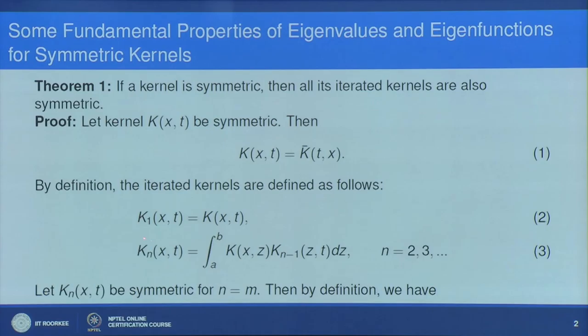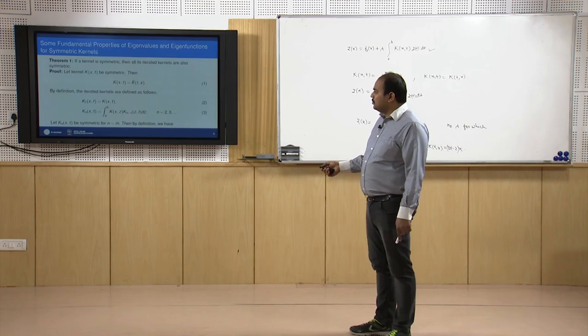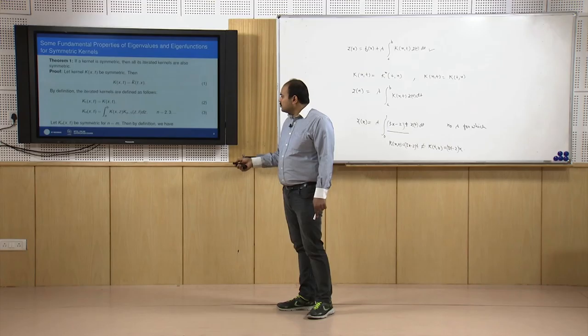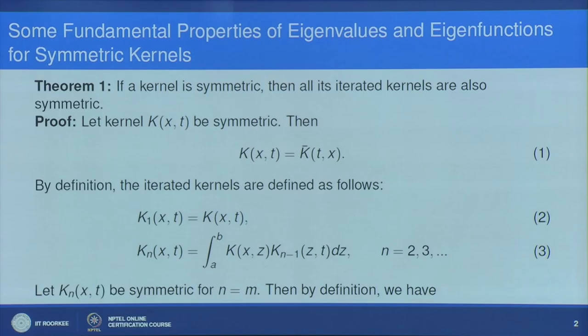The iterated kernels are defined as k₁(x,t) = k(x,t), and kₙ(x,t) = ∫[a to b] k(x,z) kₙ₋₁(z,t) dz for n = 2, 3, … We prove this by mathematical induction. For n = 1, the result is trivially true. Assuming the result is true for n = m, we want to prove it for n = m+1.